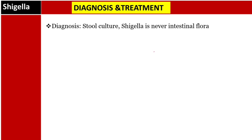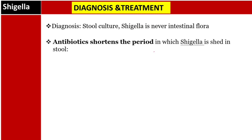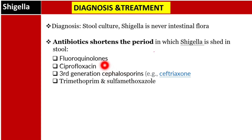For diagnosis, Gram staining is step one, but stool culture is very important for Shigella specifically, because Shigella is never part of normal intestinal flora — it is always pathogenic. Antibiotics shorten the period in which Shigella is shed in stools. Main antibiotics used include fluoroquinolones such as ciprofloxacin, third-generation cephalosporins like ceftriaxone, and trimethoprim-sulfamethoxazole.